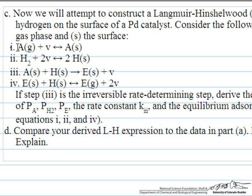The first step is reversible adsorption of acetylene. The second step is reversible but dissociative adsorption of hydrogen. The third step is an irreversible rate-determining reaction of adsorbed acetylene with hydrogen to produce ethylene, or a form of ethylene on the surface. The final step is a reversible reaction of adsorbed ethylene with another hydrogen atom to make gas-phase ethylene and free up the vacant surface sites.